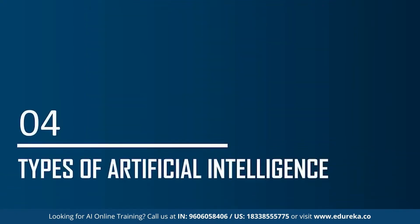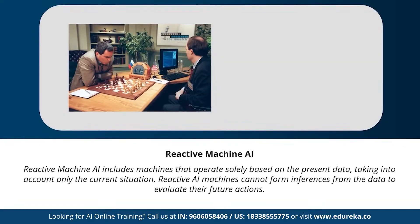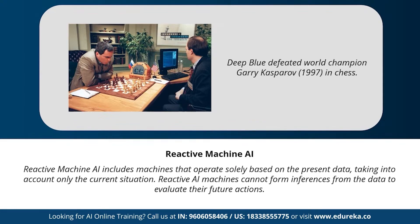Now, the different types of artificial intelligence. Based on functionality, AI can be categorized into four types. The first is reactive machines AI — machines that operate solely based on present data and consider only the current situation. Reactive AI machines cannot form inferences from data to evaluate future actions. An example is IBM's chess program that beat world champion Garry Kasparov.